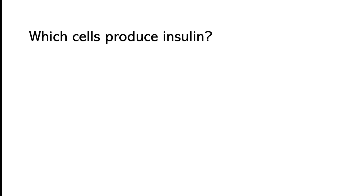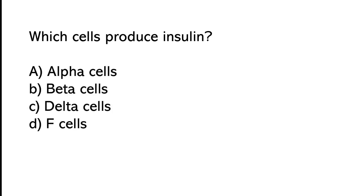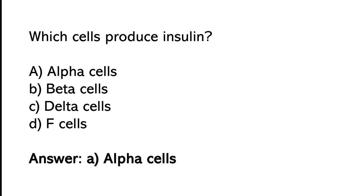Which cells produce insulin? Alpha cells, beta cells, delta cells, or epsilon cells. The correct answer is option B — beta cells.